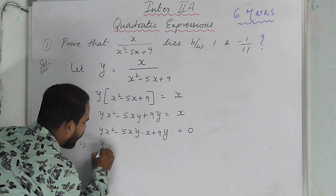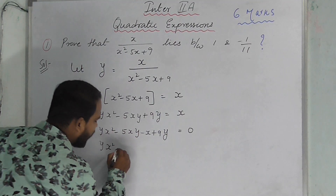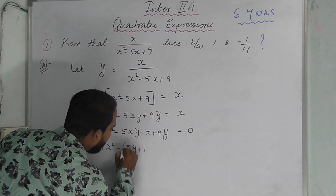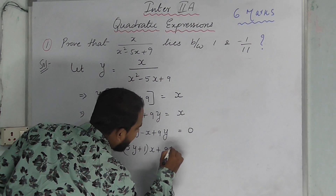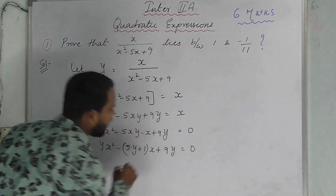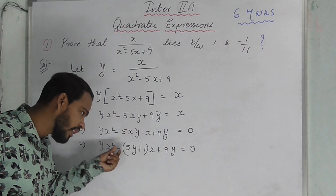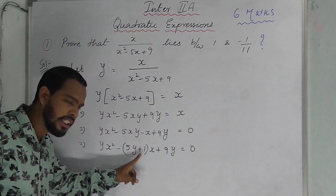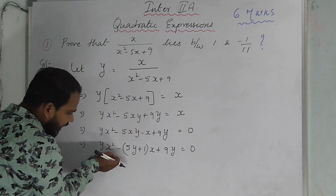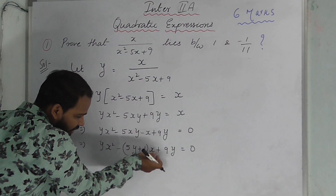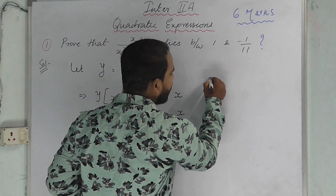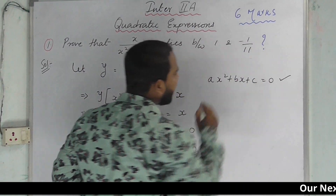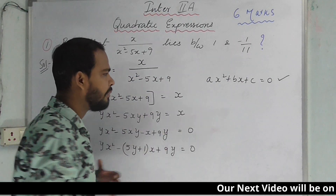Looking at the next step: this is y times x squared, here we have x, and the constant. This matches the standard form ax squared plus bx plus c equals 0 — this is a quadratic equation, where the coefficient of x squared is y.